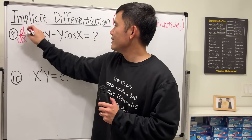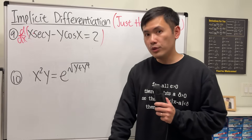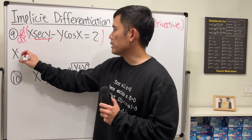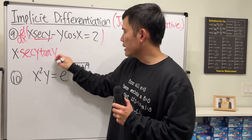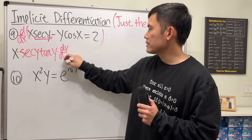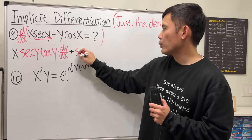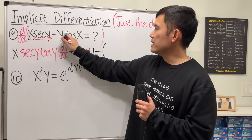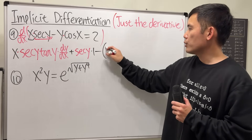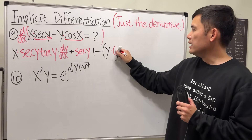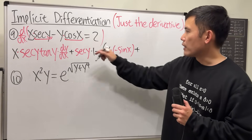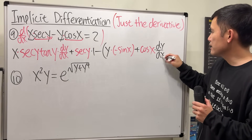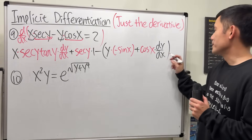Number 9. Take the derivative. Firstly, we have x times secant y, so we need the product rule. Keep the first function x, and multiply by the derivative of secant, which is secant tangent — keep the input, so we have secant y times tangent y — then multiply by dy/dx. Then add the second function secant y times the derivative of the first, which is just 1. Then we have a minus, and for y times cosine x we again need the product rule: keep y, multiply by the derivative of cosine x which is negative sine x. Then add cosine x times the derivative of y, which is dy/dx. And the derivative of 2 is just 0.